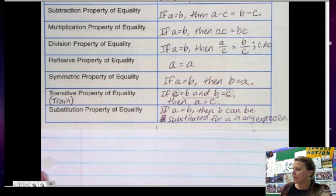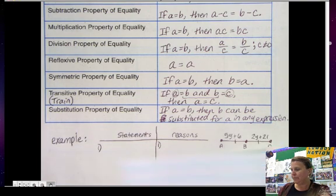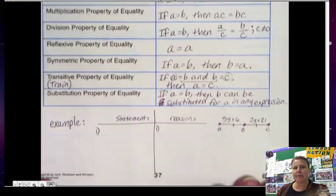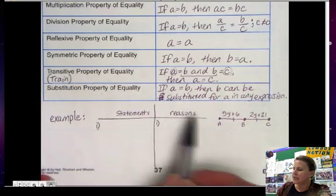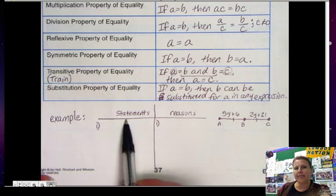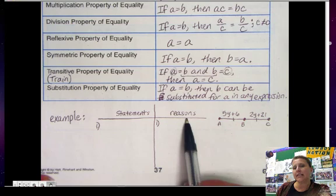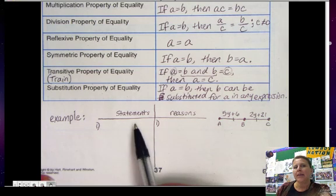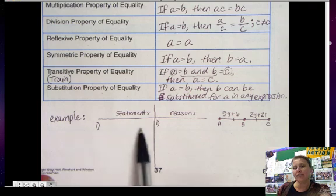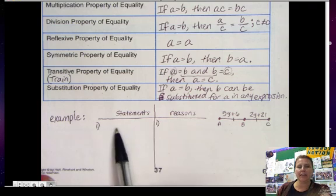So let's do an example and we're going to use these properties of equality and we're going to write our first proof. So here's an example. Now a proof has this t chart here. On the left of the t chart are the statements. On the right of the t chart are the reasons for the statements. And that's what a proof is. You have to give a reason for everything that you say.